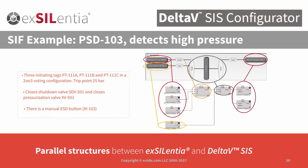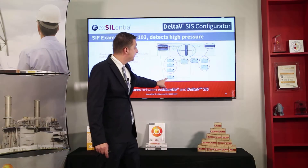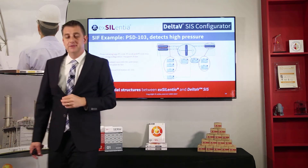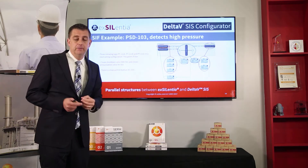Let's look at it in a little bit more detail. I have a very simple safety instrumented function here. It consists of a voting arrangement — two out of three transmitters and a single ESD push button — that go into a logic solver driving two outputs. We can see an analog voter block here with three inputs, representing my two-out-of-three voting.